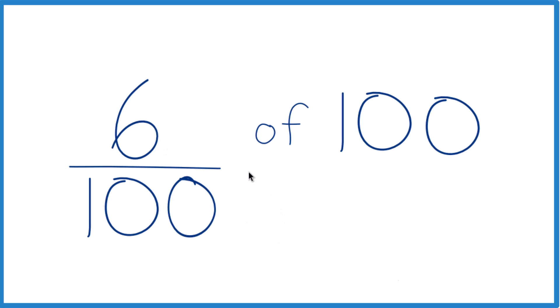Probably what your teacher wants you to do is take 6 and divide it by 100. Get a decimal and then multiply the decimal times 100. That'll give you the percent.